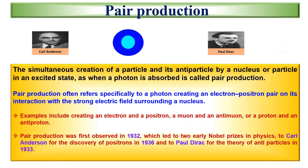The simultaneous creation of a particle and its antiparticle by a nucleus or particle in an excited state, as when a photon is absorbed, is called pair production. Pair production often refers specifically to a photon creating an electron-positron pair on its interaction with the strong electric field surrounding a nucleus. Examples include creating an electron and a positron, a muon and an anti-muon, or a proton and an antiproton. Pair production was first observed in 1932, which led to two early Nobel Prizes in Physics: to Karl Anderson for the discovery of positrons in 1936, and to Paul Dirac for the theory of antiparticles in 1933.